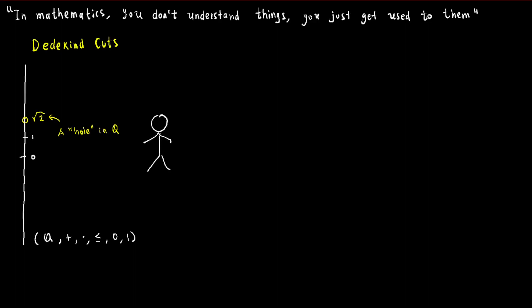That's where Dedekind cuts come in. No, not a risky trim from your local barber, but a clever method to make sense of these pesky holes in the rational number line. And the best part? We won't even need sharp objects. Just the ordered structure of the rational numbers will do.